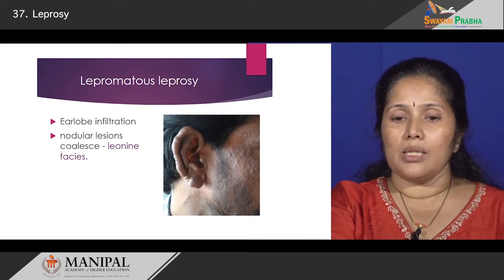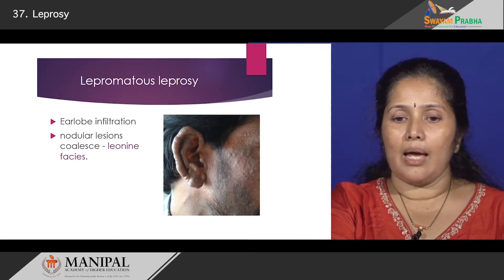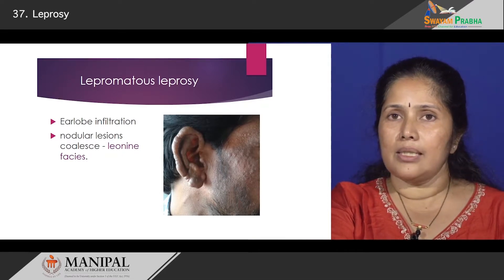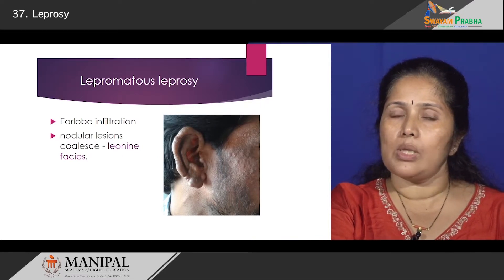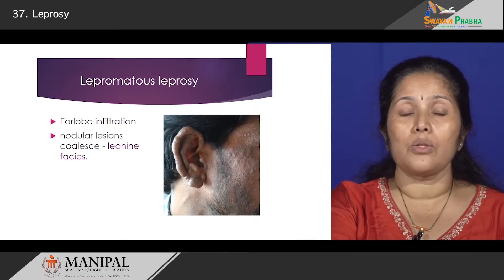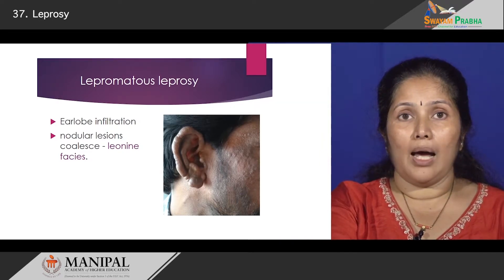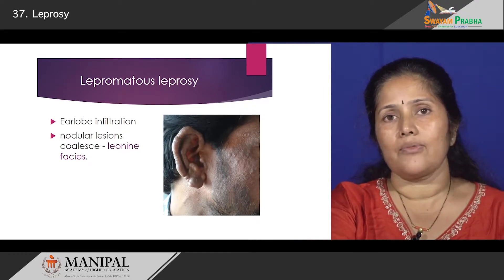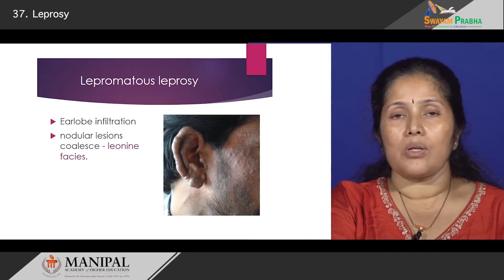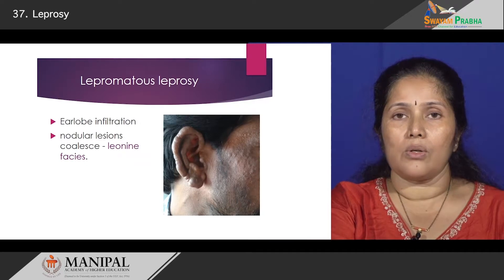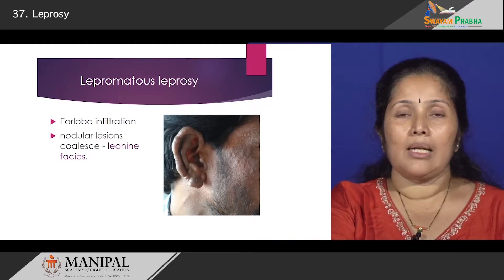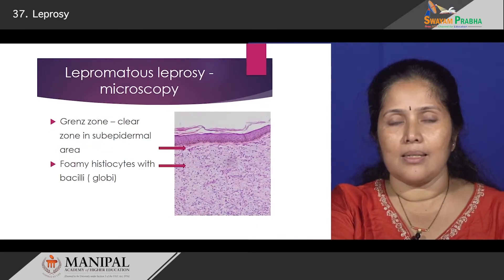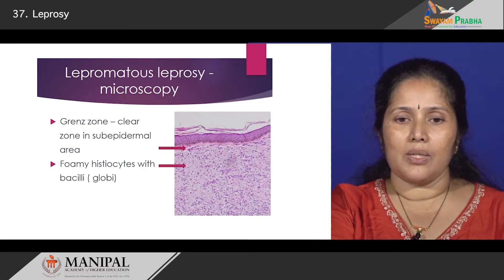In this picture you are seeing a patient who has ear lobe infiltration. These nodular lesions coalesce — they join together and form larger lesions — which become so extensive that we have what is known as a leonine face, or a lion-like look of the patient. That is a very classic look of lepromatous leprosy patients.